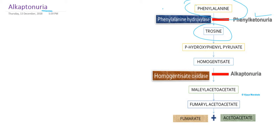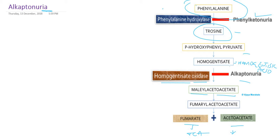In phenylalanine metabolism there are different reactions, and finally they will be converted to fumarate and acetoacetate. Fumarate enters the TCA cycle and acetoacetate can be converted to ketone bodies. In the middle of the reaction there is a compound called homogentisate, otherwise called homogentisic acid. This reaction is normally converted to maleylacetoacetate by the enzyme homogentisate oxidase. If a baby is born with a defect in this enzyme, homogentisate is no longer converted to maleylacetoacetate and will not yield fumarate and acetoacetate.